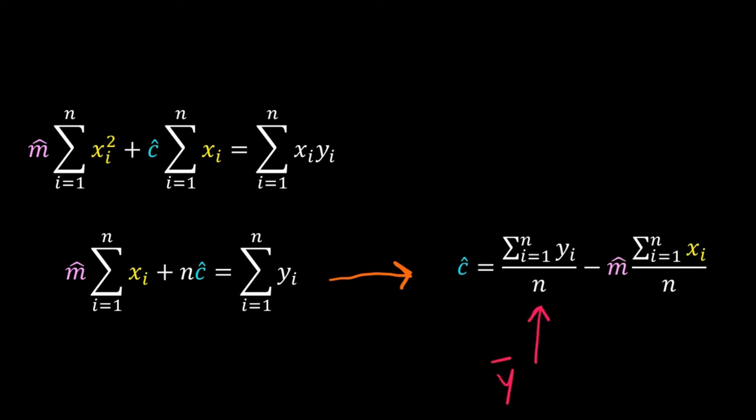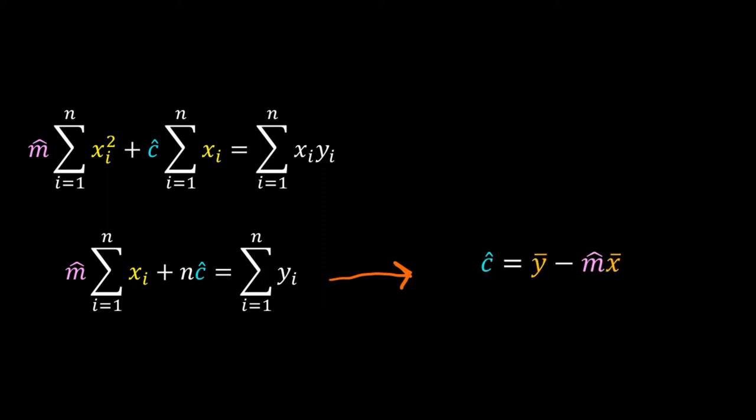Σyi divided by n gives the mean of y, ȳ. Similarly, Σxi divided by n is the mean of x, x̄. So we get ĉ = ȳ − m̂·x̄.